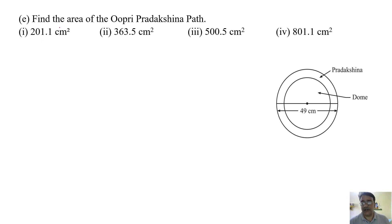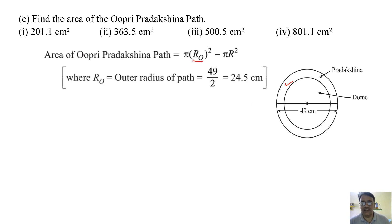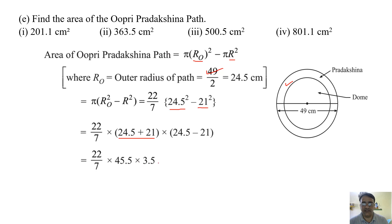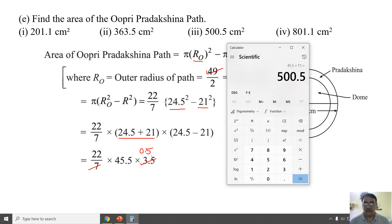Fifth question: find the area of the upri pradakshina path. We calculate: area of outer circle minus area of inner circle, using the ring formula π(R² − r²). The outer diameter is 49 centimeters, so outer radius R = 24.5 centimeters, and inner radius r = 21 centimeters. Using the difference of squares: (24.5 + 21)(24.5 − 21) = 45.5 × 3.5. After cancellation with 22/7, we get 500.5 centimeter square. This is the correct option.